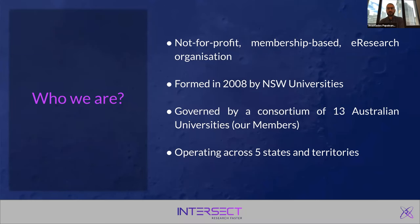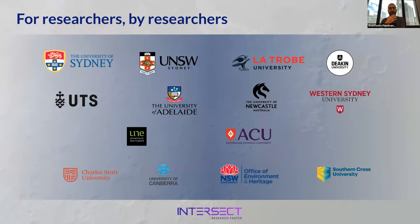A few things before we start about Intersect and who we are. Intersect is a not-for-profit, membership-based e-research organization, formed back in 2008 by mainly New South Wales universities. Nowadays we are governed by a consortium of 13 Australian universities across five states and territories. Most members are from New South Wales, but we also have presence in South Australia, ACT with University of Canberra, and Victoria with Deakin and La Trobe.